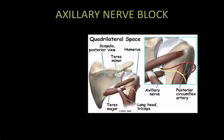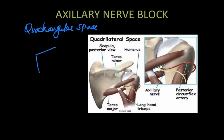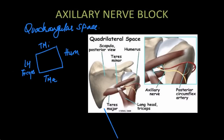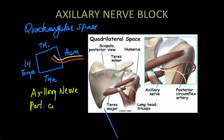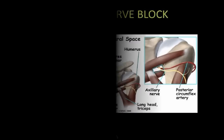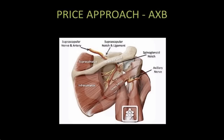For the axillary nerve block you need to block the nerve near the quadrangular space, which we spoke about in the last podcast. It is bounded superiorly by teres minor, inferiorly by teres major, medially by the long head of triceps, and laterally by the humerus. Through this space the axillary nerve comes out laterally, supplying the deltoid muscle and the shoulder joint, and it is also accompanied by the posterior circumflex humeral artery.